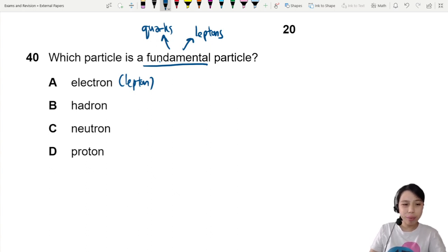Hadron, not exactly. It's made up, it's just a name of a class of particles. Neutron is made out of three quarks and protons also made out of three quarks.